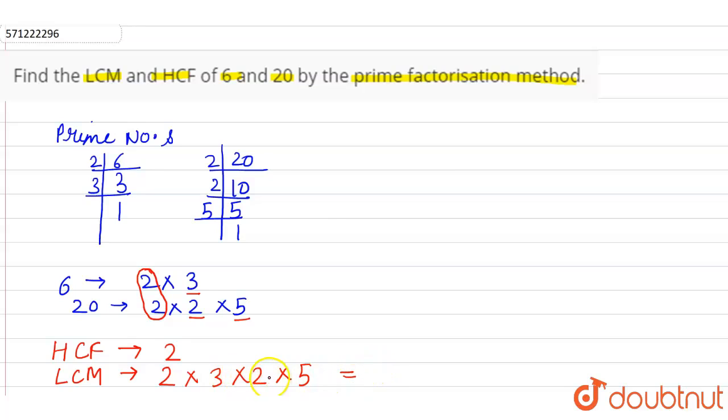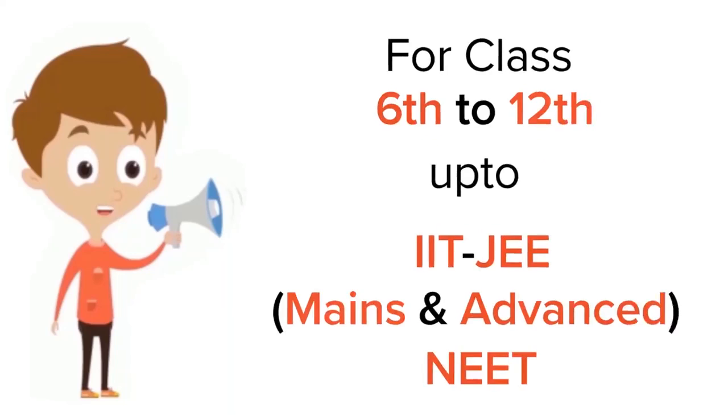This is equals to 2 into 6 into 10, which is 60. So HCF of 6 and 20 is 2 and LCM is 60.